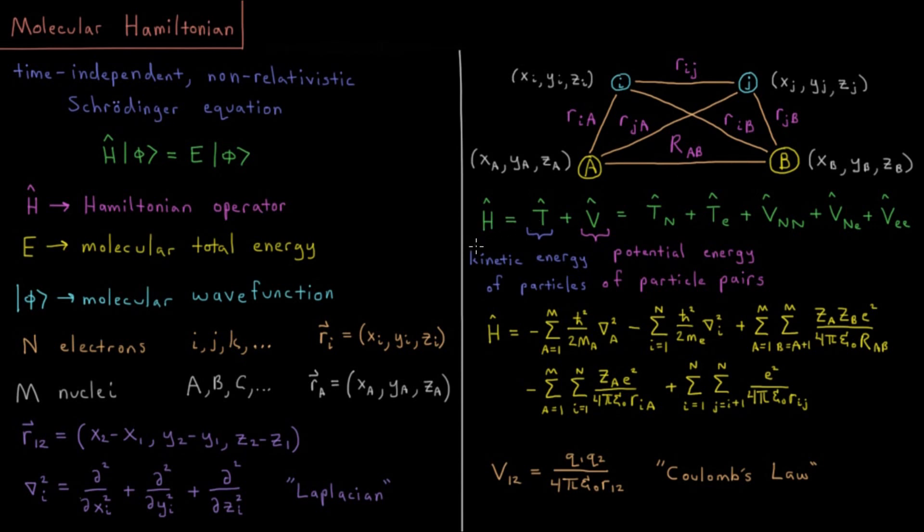Now getting into what the molecular Hamiltonian operator actually is. If you're struggling to remember the Hamiltonian, I recommend the quantum chemistry playlist, chapter three or four. The Hamiltonian operator is the total energy operator composed of two parts: kinetic energy T plus potential energy V.